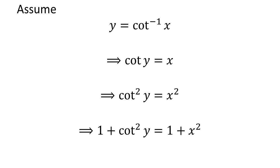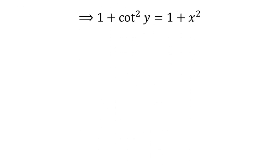Adding 1 to both sides gives us 1 plus cotangent squared of y is equal to 1 plus x squared. By the famous trigonometric identity, 1 plus cotangent squared of y is equal to cosecant squared of y. So, cosecant squared of y is equal to 1 plus x squared.